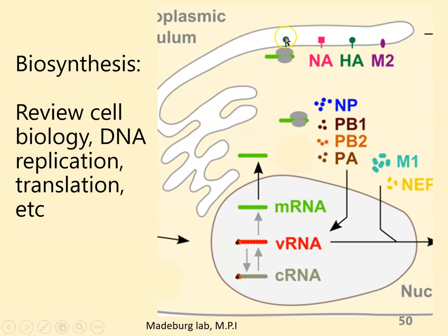Some ribosomes are free-floating in the cytoplasm and others are attached to the endoplasmic reticulum. The ones in the cytoplasm make cytoplasmic proteins that can just hang out there. The ones attached to the endoplasmic reticulum put proteins into the ER membrane. These are ultimately going to be sent to the Golgi in vesicles and are destined for the cell membrane. So those enzymes make the reverse complement, which serves as messenger RNA, and that leads to synthesis of all these proteins.